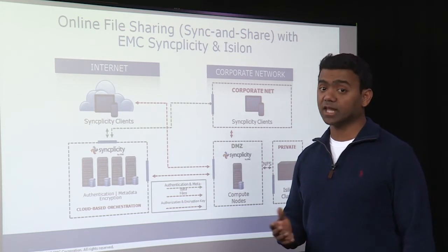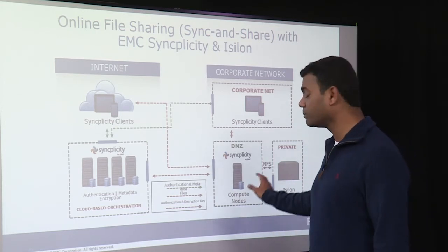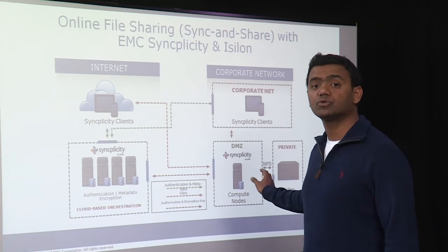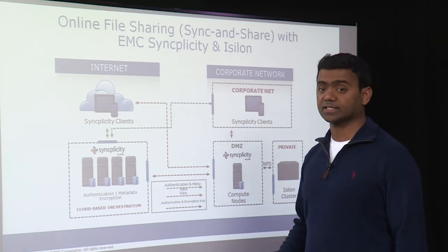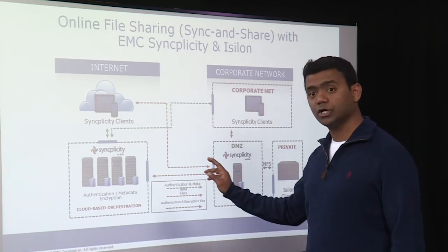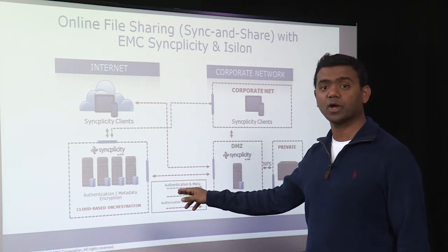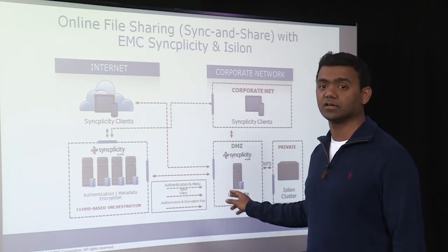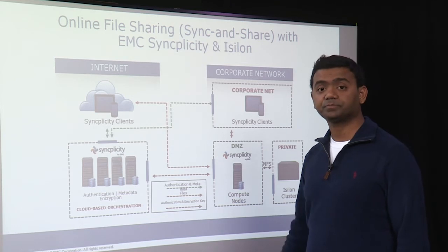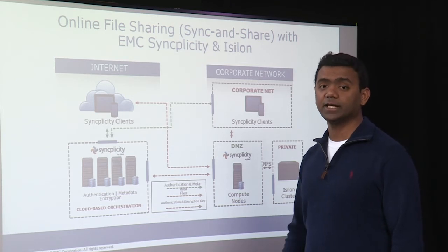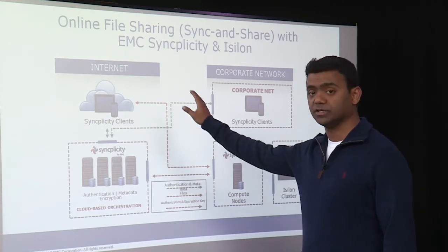The compute component will also send the encryption key and metadata back to the orchestration to be stored there. Similarly, in a download use case, the device makes a call to the compute component to retrieve the file. The compute component then contacts the orchestration to authorize the download request and obtain the encryption key and metadata for the requested file. Finally, the file is decrypted and streamed directly to the device.